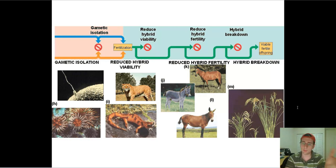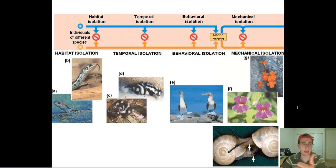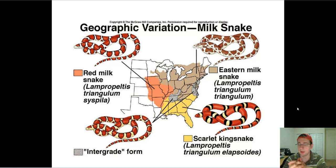That's why the biological species concept holds that two different organisms of different species cannot successfully cross — they will have incompatible gametes, different habitats, they will do things at different times and differently, and they will have different mechanical or molecular structures which will prevent them from crossing. Here are a few more examples of these kinds of isolation.